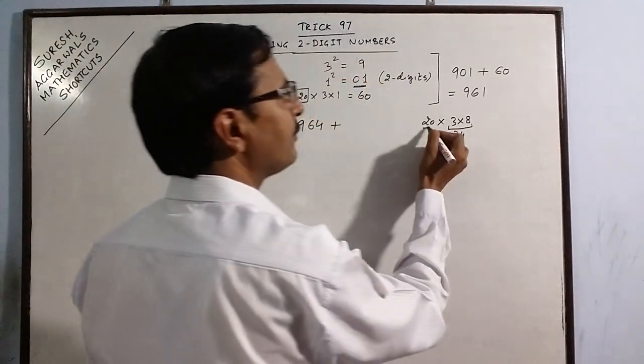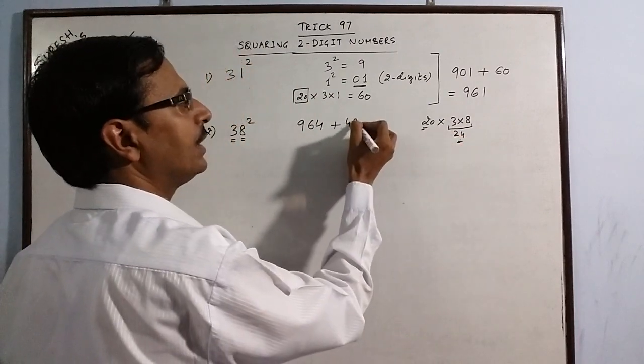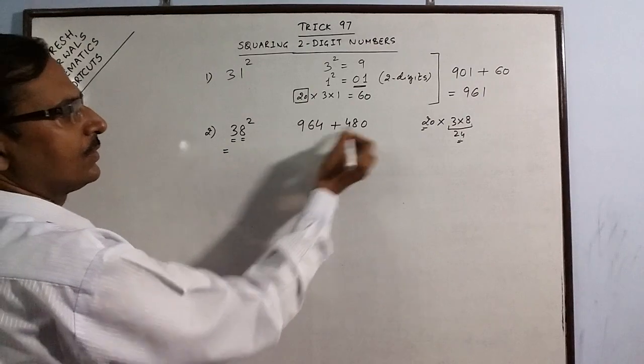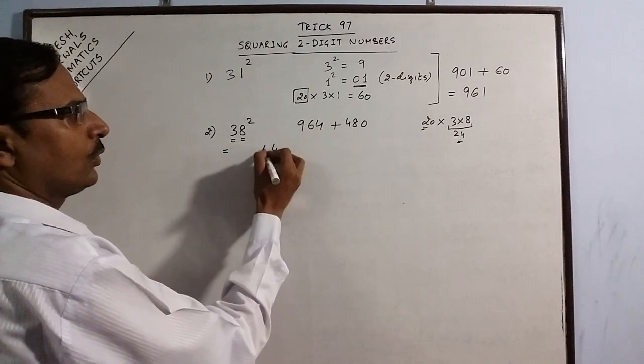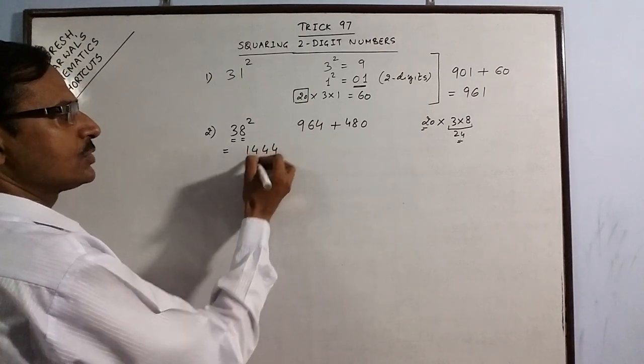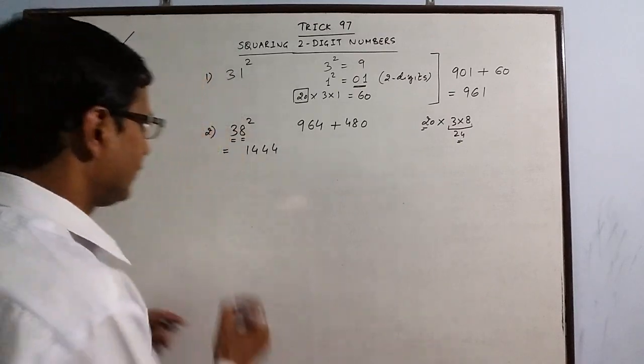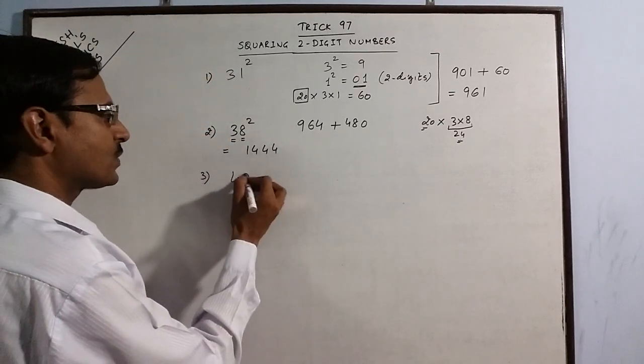3 into 8 is 24, double of 24 is 48 and a zero, so just add and you get the answer: 1444 is the square of 38.